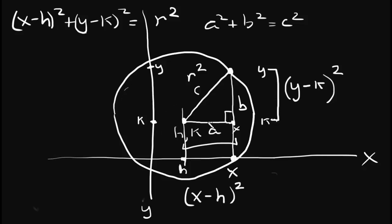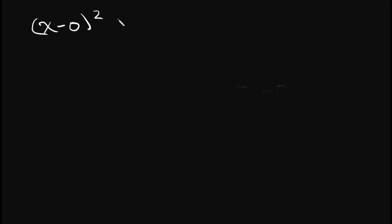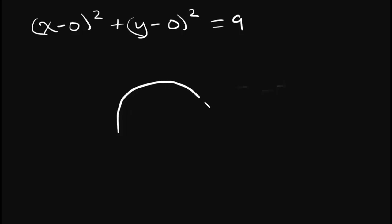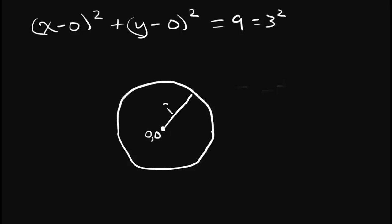So now you know why we put in the h and the k and why we're subtracting them. That's still pretty abstract, so let's take a simple but concrete example. Suppose we had this equation: (x minus 0) squared plus (y minus 0) squared equals 9. That means, since this is in the form (x minus h) squared plus (y minus k) squared equals r squared, we have a circle whose center is at (0, 0) and whose radius squared is 9, which equals 3 squared. So the radius has a length of 3.